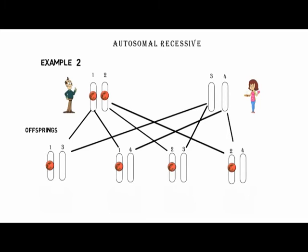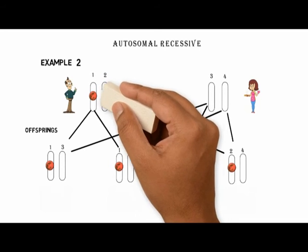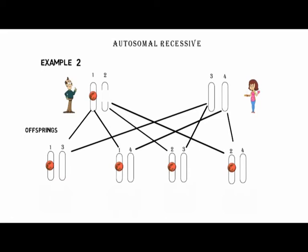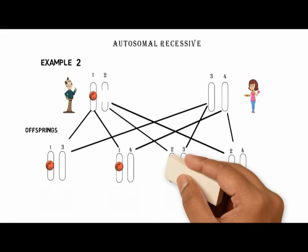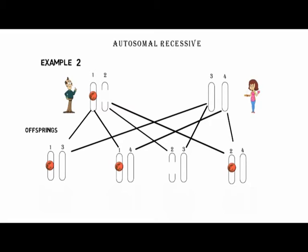Example number 2: Father is a carrier, meaning one gene is defective or diseased, whereas the mother is normal, meaning both genes are normal. Let's see the four possibilities. Gene 1, the defective gene from the father, and gene 3 from mother; gene 1 from father and gene 4 from mother; gene 2 from father, which is normal, and gene 3 from mother; or gene 2 from father and gene 4 from the mother.